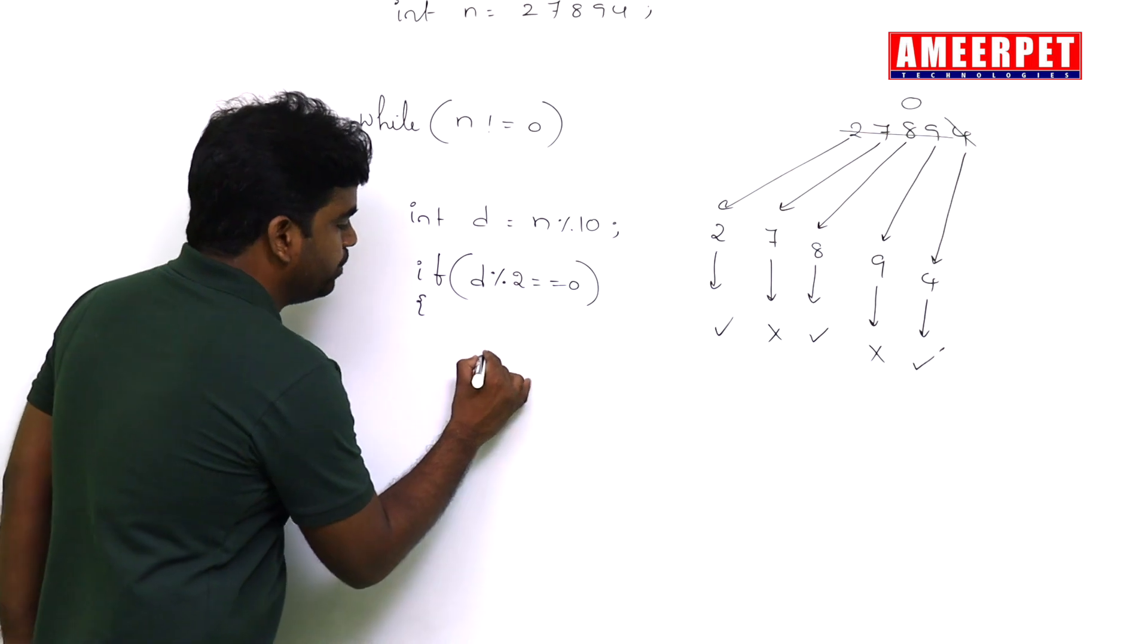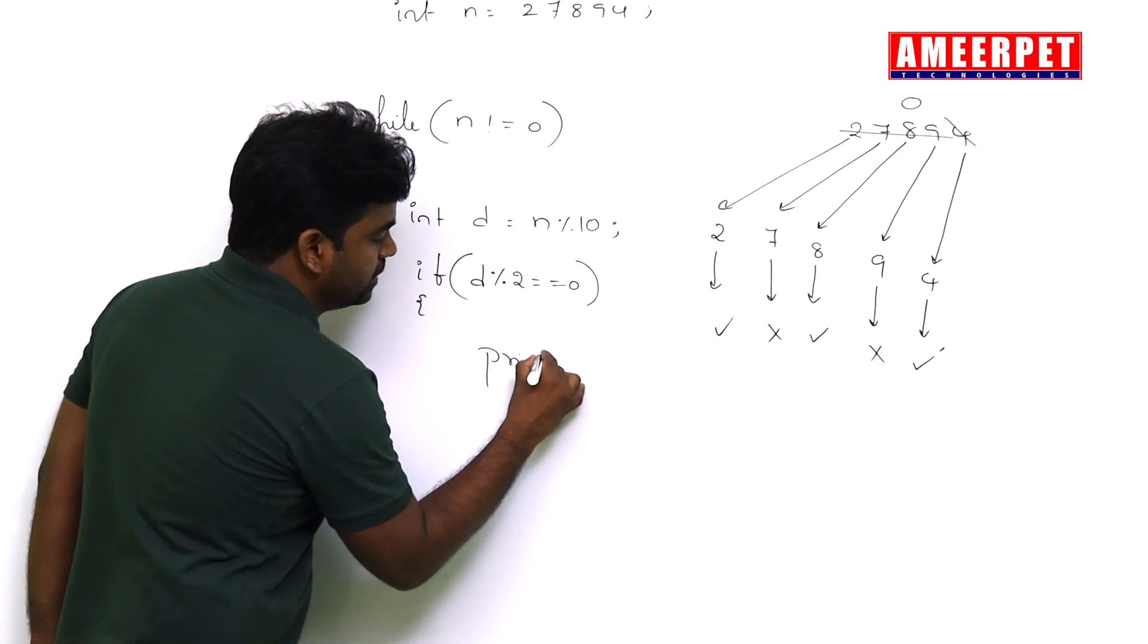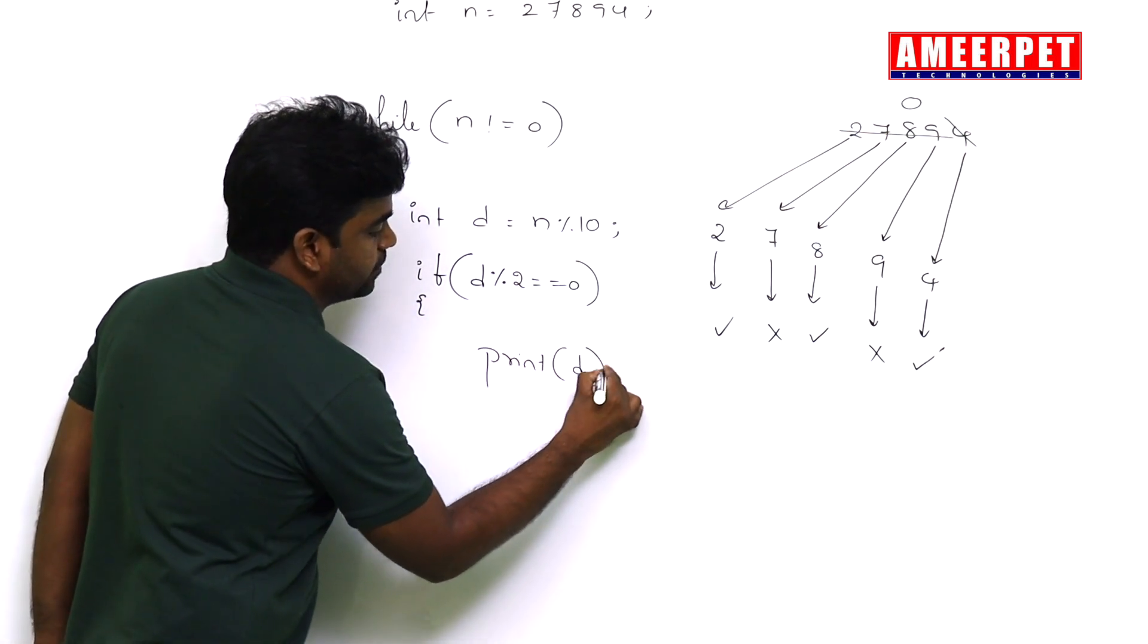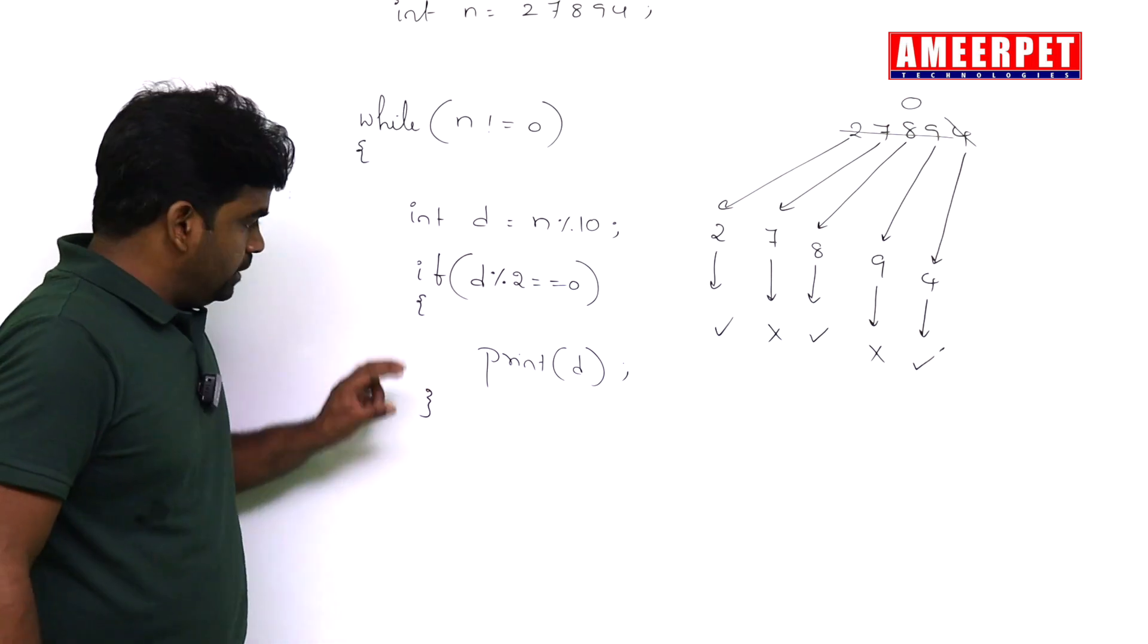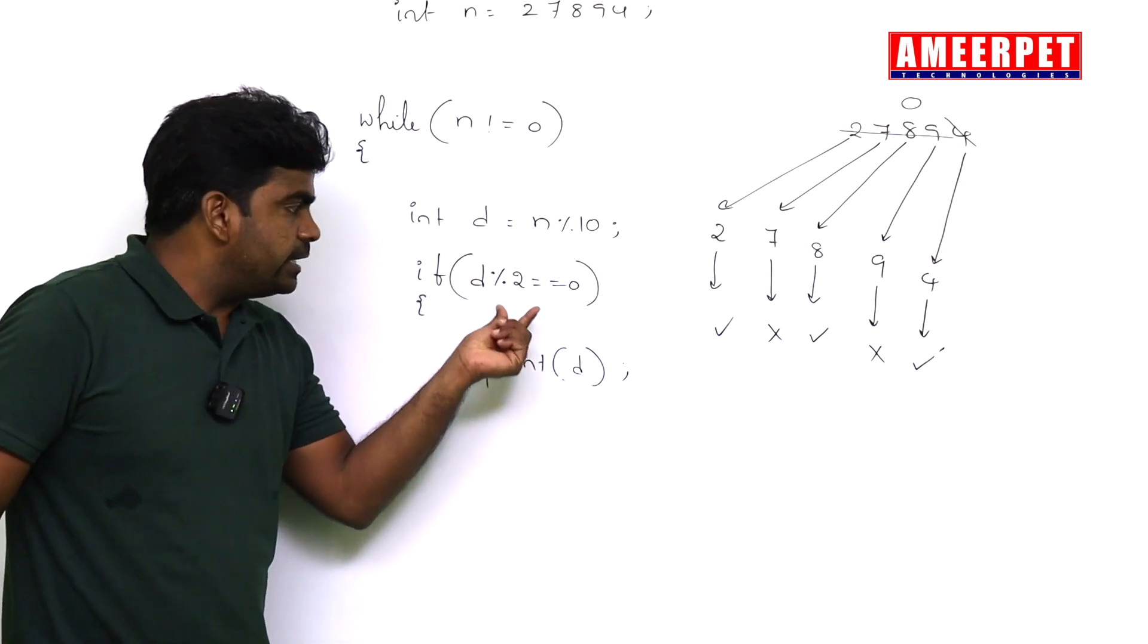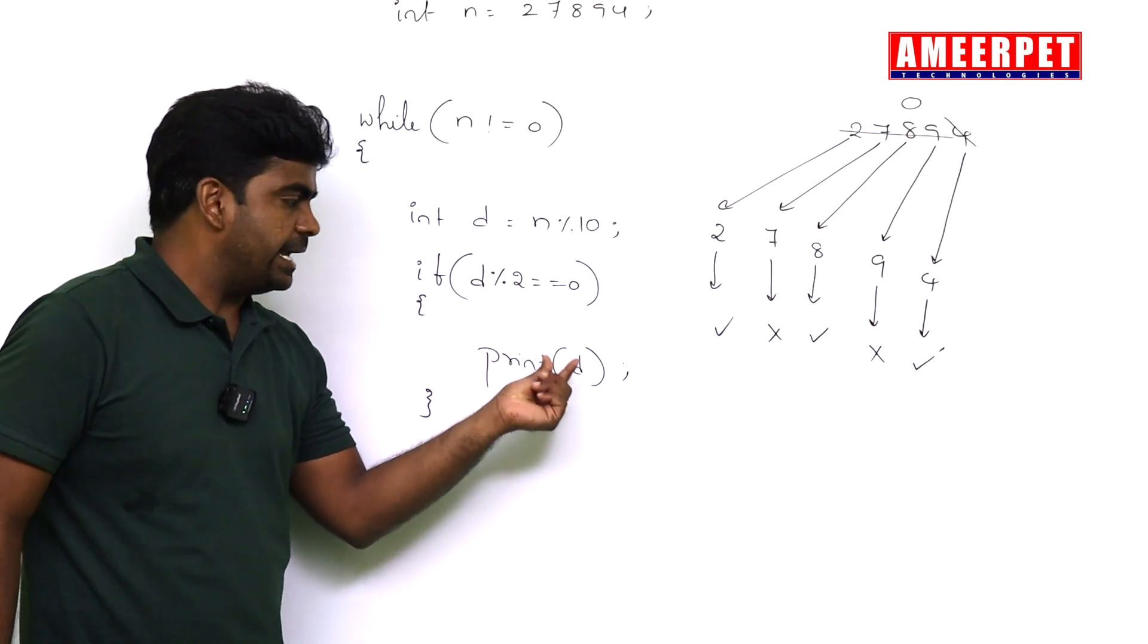if the digit is divisible by 2, then print that digit d. See, we're printing the digit only on condition, not directly printing.